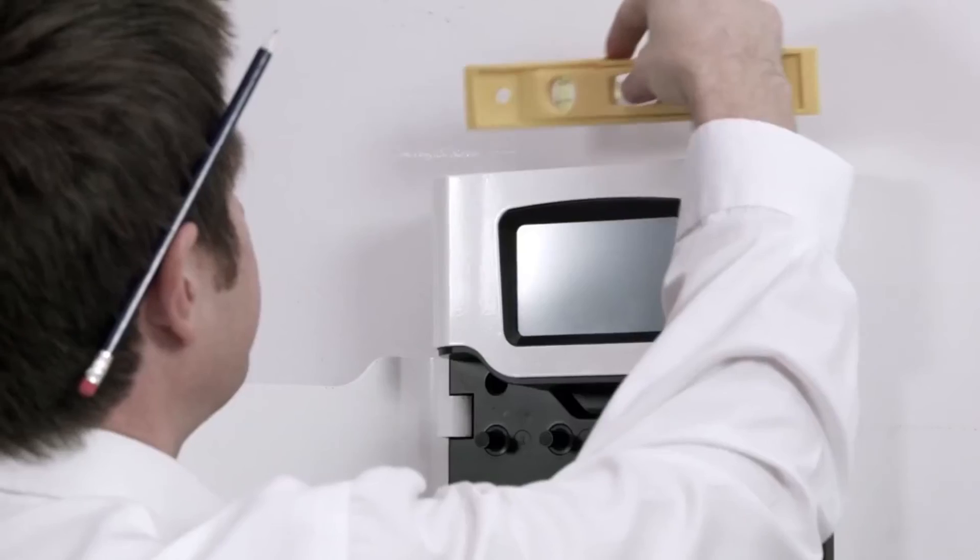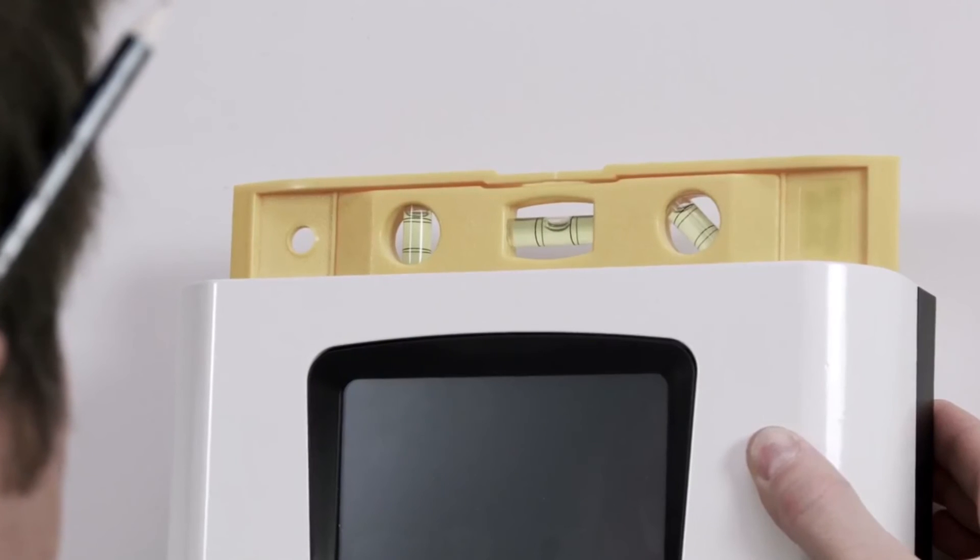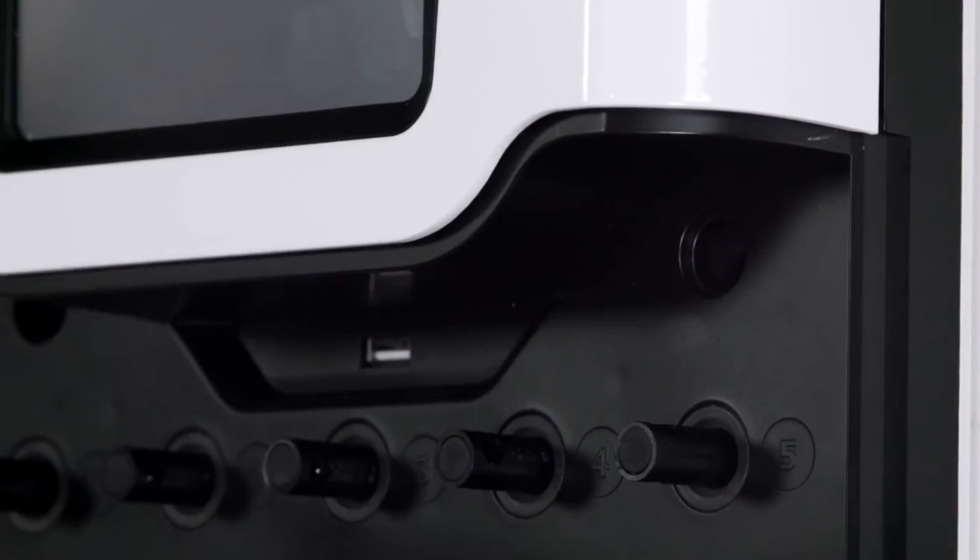Hold the system to the wall and use the level to ensure it is straight. Mark the four fixing points using a pen.